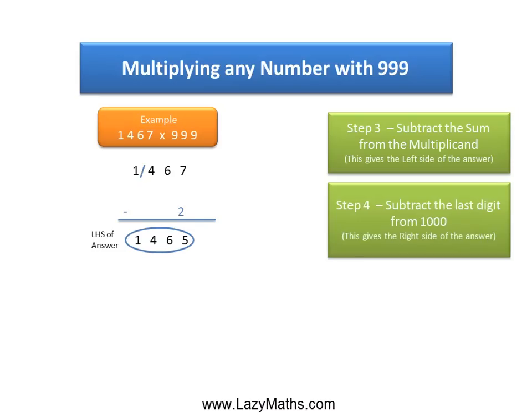To get the right-hand side of the answer, all we need to do is subtract the 467 from 1000. 1000 minus 467 gives us 533.